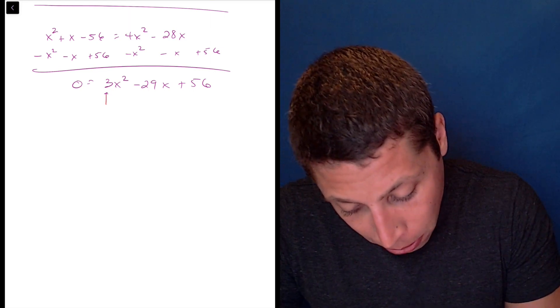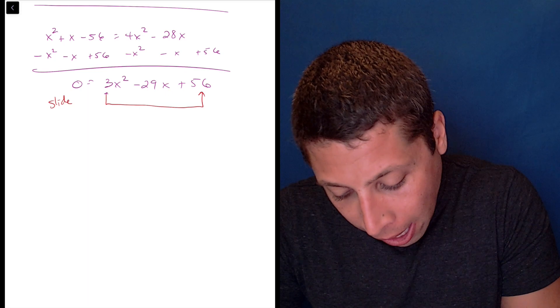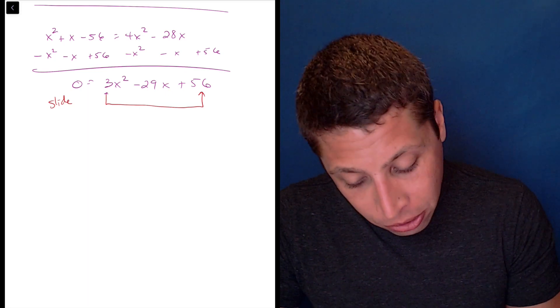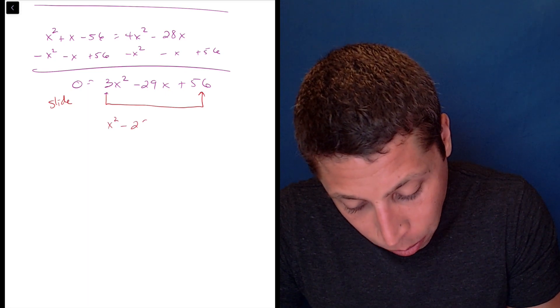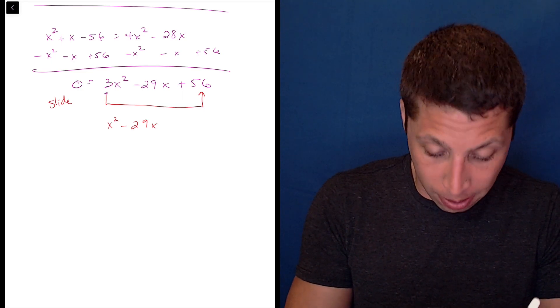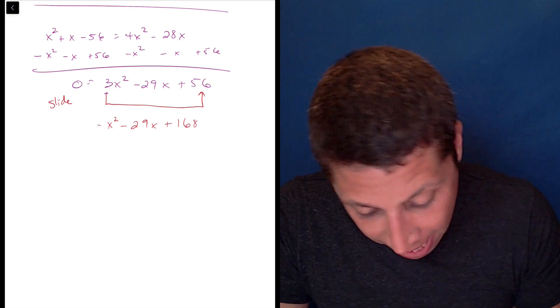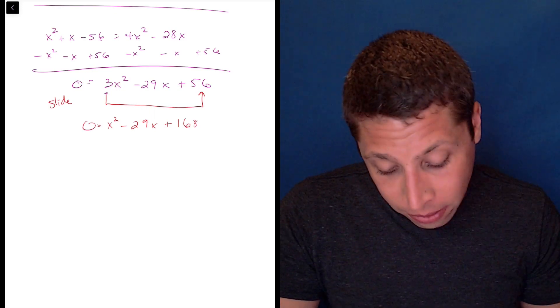So what that means is I'm going to hope that if I move this 3 over to here by multiplying, I can factor the resulting better equation. So that's going to be x squared minus 29x, 56 times 3 is 168. And now I need to figure out factors.